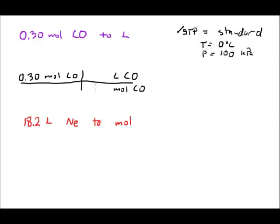At STP conditions, one mole of any gas, doesn't matter what it is, will have a volume of 22.4 liters. So multiplying through, this allows us to calculate the volume of carbon monoxide. That will work out to be 6.7 liters of carbon monoxide.